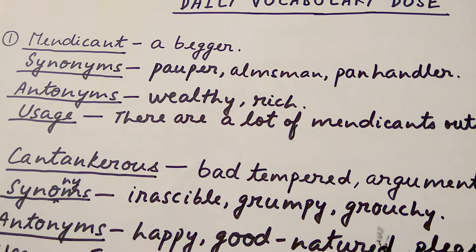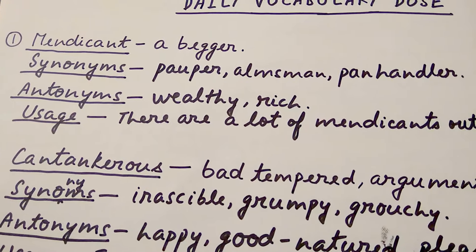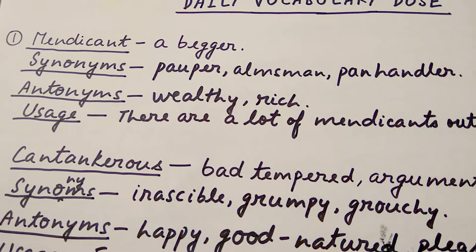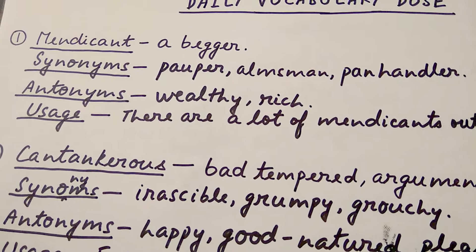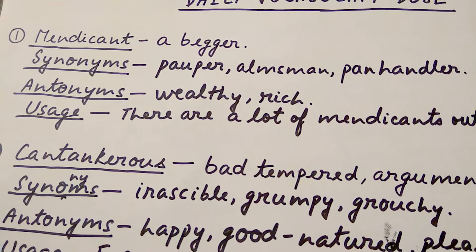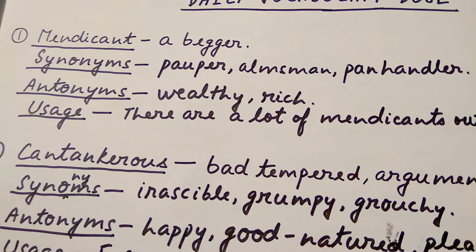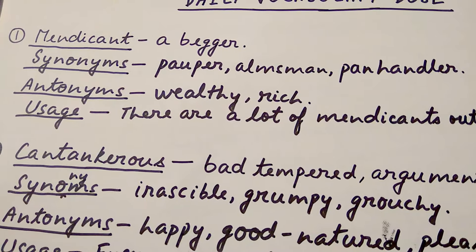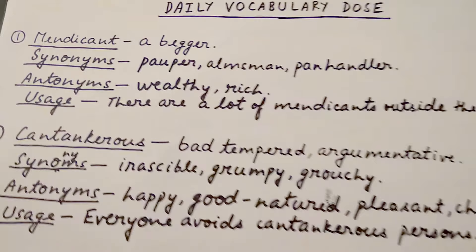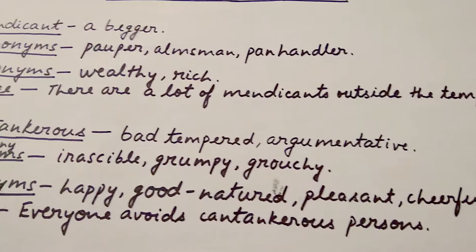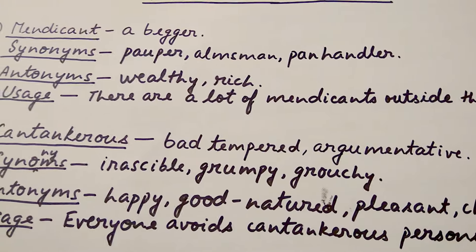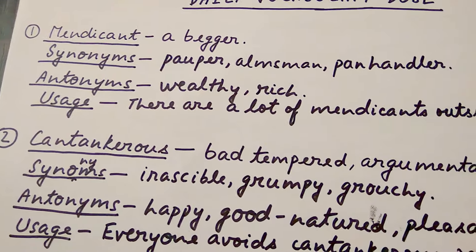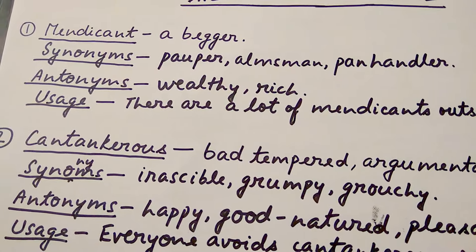The very first word is 'mendicant', which means a beggar. Its synonyms are 'almsman' and 'panhandler'. Its antonyms are 'wealthy' or 'rich'. For usage in a sentence: 'There are a lot of mendicants outside the temple' — meaning there are many beggars sitting outside the temple.